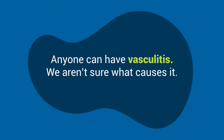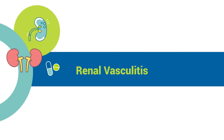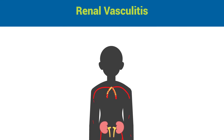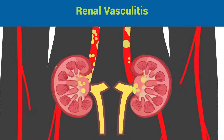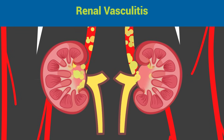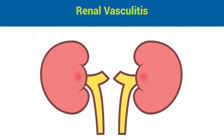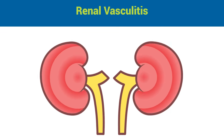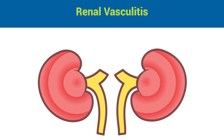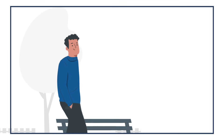Some types of vasculitis called renal vasculitis can damage the filters in your kidneys called glomeruli. Glomeruli are formed by tiny blood vessels called capillaries, and they filter waste out of your body. Over time, this can lead to kidney disease. There are two main types of renal vasculitis.